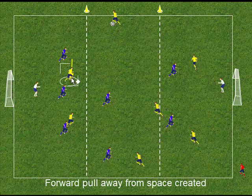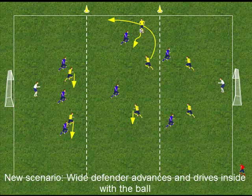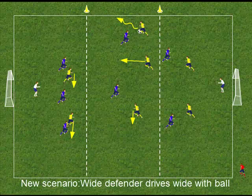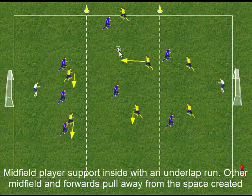As the ball is travelling, the players pivot round. In this example, the midfield player goes on an overlap supporting run from a wide player who has driven inside with the ball. Here the wide player has gone wide with the ball, creating an underlap opportunity for a supporting run from a midfield player.